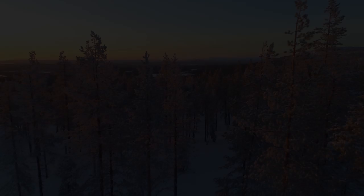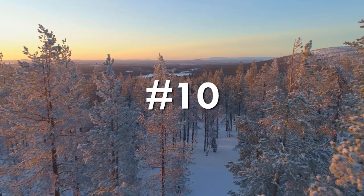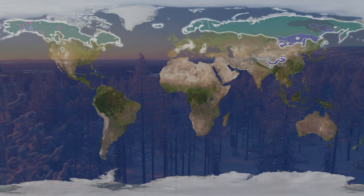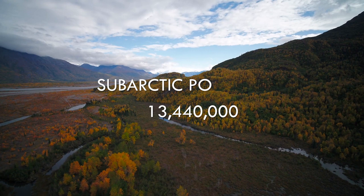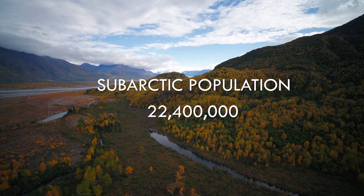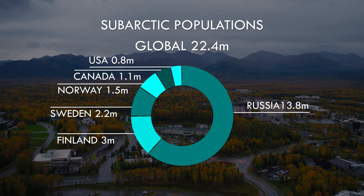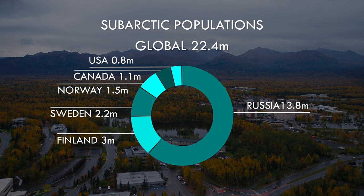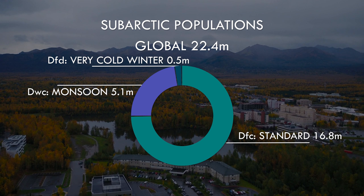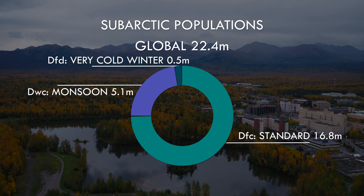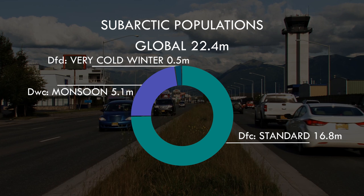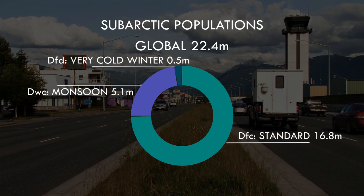At number 10, we have the next coldest zone — the vast subarctic band that spreads across North America, Europe and Asia. Now we are getting into the millions in terms of population, but still less than a fifth of one percent of humans live in the vast boreal forests that experience warm summers but very cold winters here. This population is mostly found in Russia, which contains the largest land area under this climate type, including the vast stretches of Siberia. Most people live in the standard subarctic of cold winters and year-round precipitation, with a smaller fraction in east Asia where only light snow falls in winter with more consistent rain in the summer. A much smaller fraction live in the area of very cold winters in the northeast of Siberia.